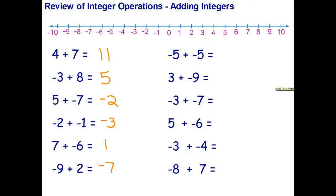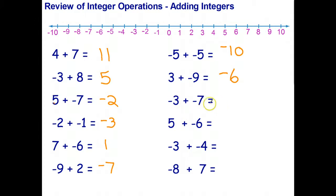Welcome back students. Negative five plus negative five — two bills just add to give a bigger bill, so that's negative ten. Three plus negative nine — I can pay off three dollars of my debt but still owe six dollars. Negative three plus negative seven — two debts add together to give a bigger debt, so that's negative ten.